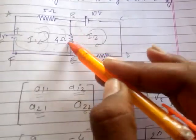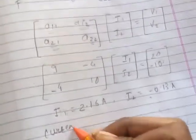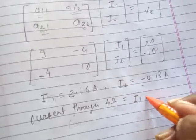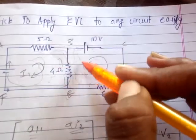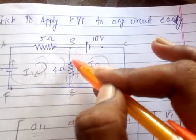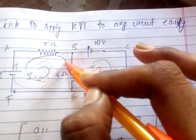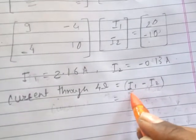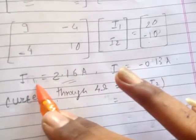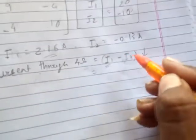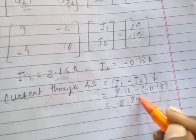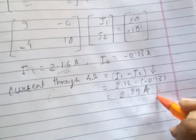If you want to find the current through the common 4-ohm resistance, you do I1 minus I2. The best trick is to take the larger value first — I1 is greater, so we take I1 first, and the direction of I1 is downwards. Therefore: 2.16 minus (minus 0.13) equals 2.29 amperes, and the direction of the resultant current is downwards.